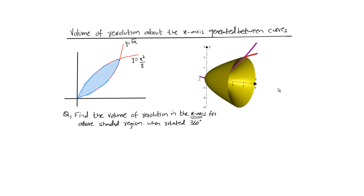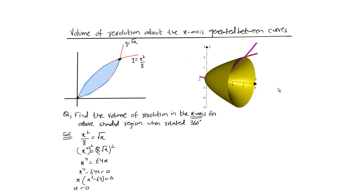To solve this, first find the intersection points by solving the two equations simultaneously. Squaring both sides gives x = 0 and x = 4. So the limits of integration are 0 and 4.